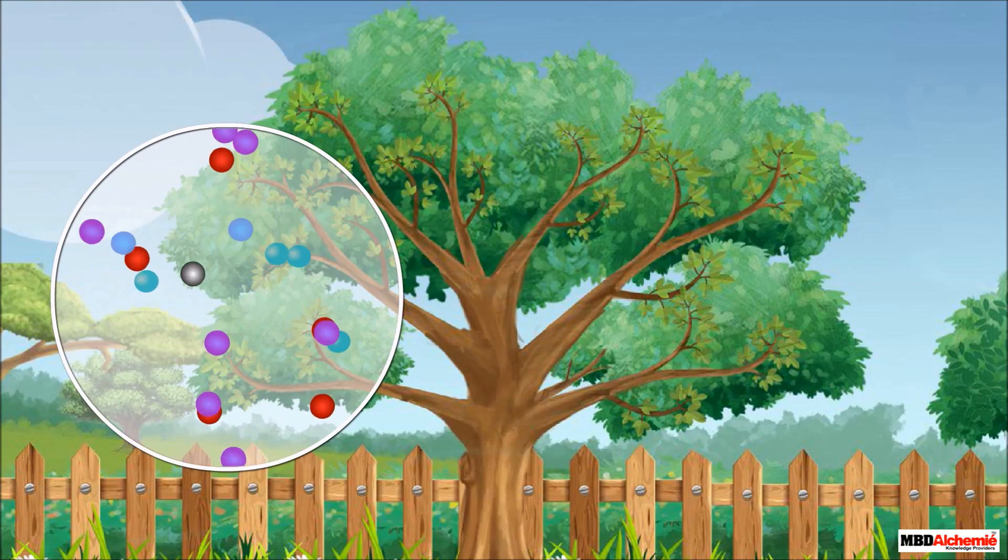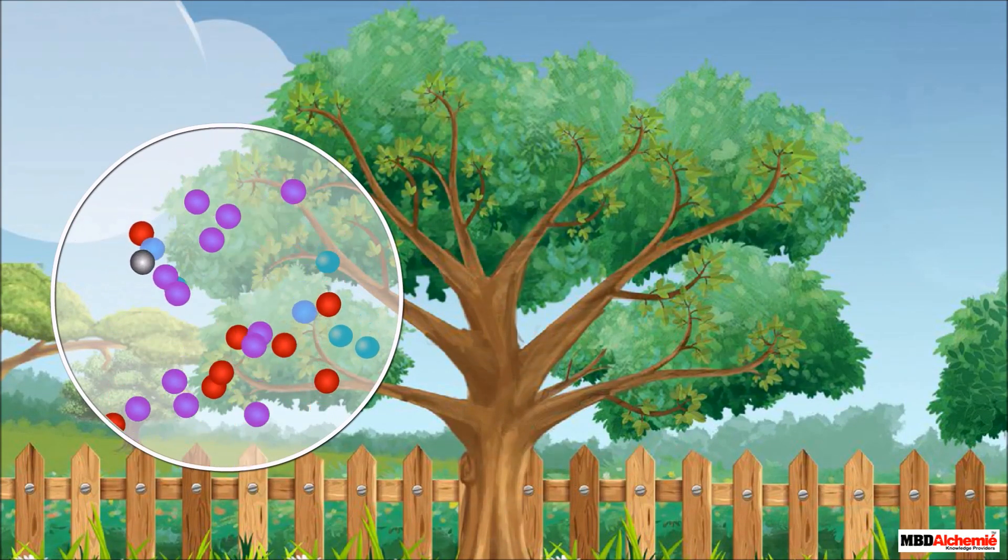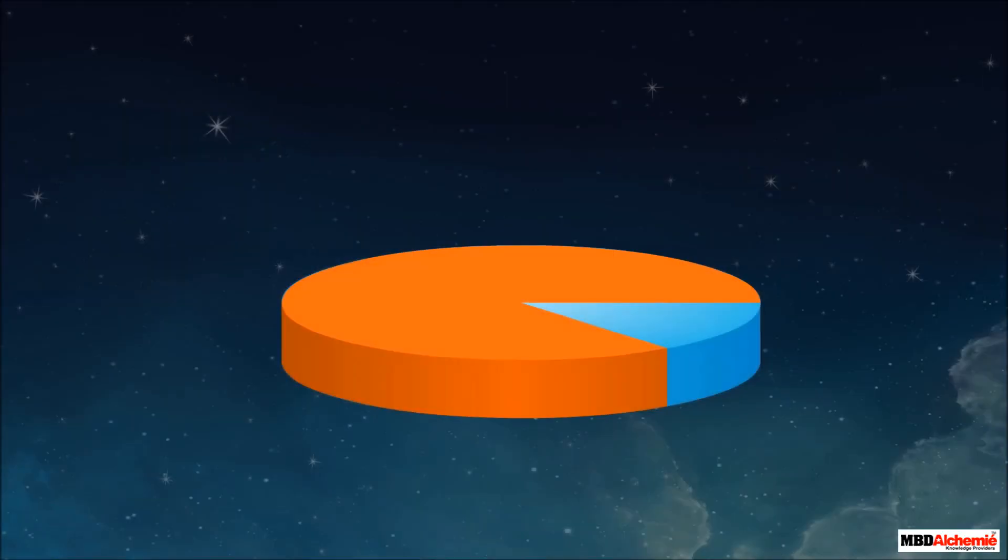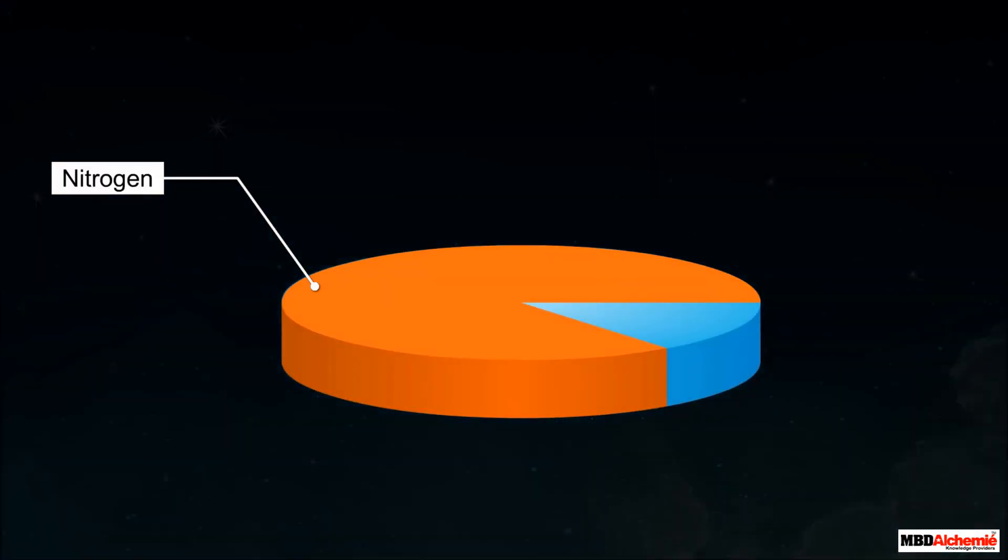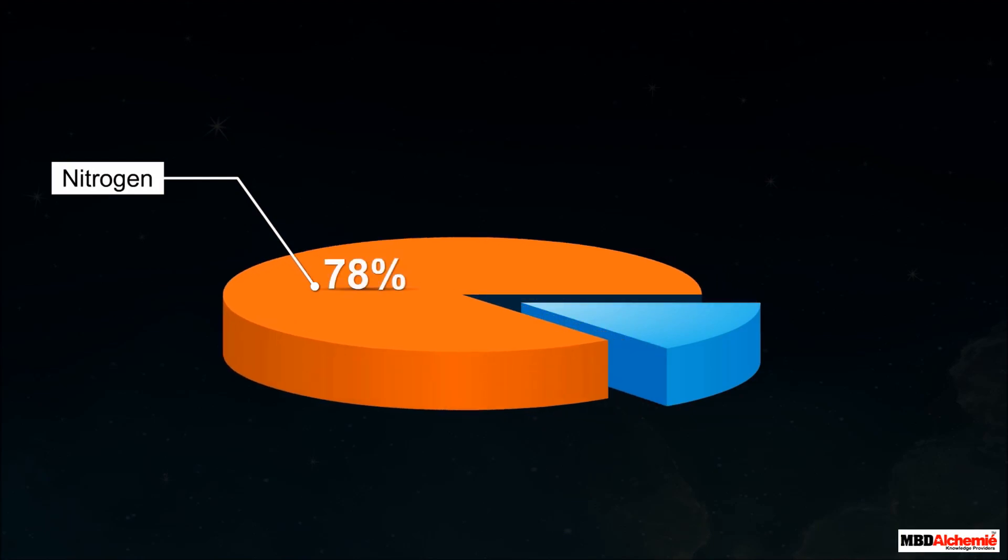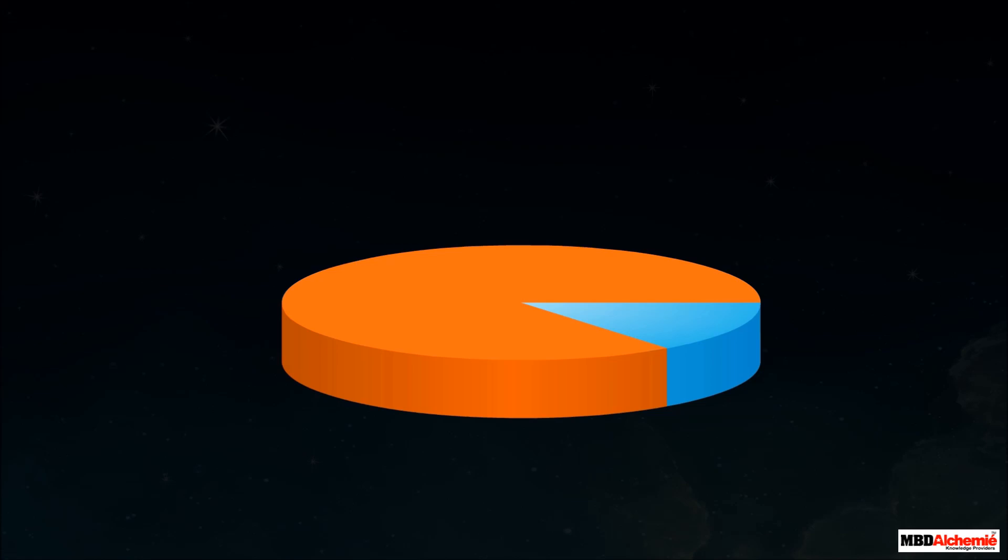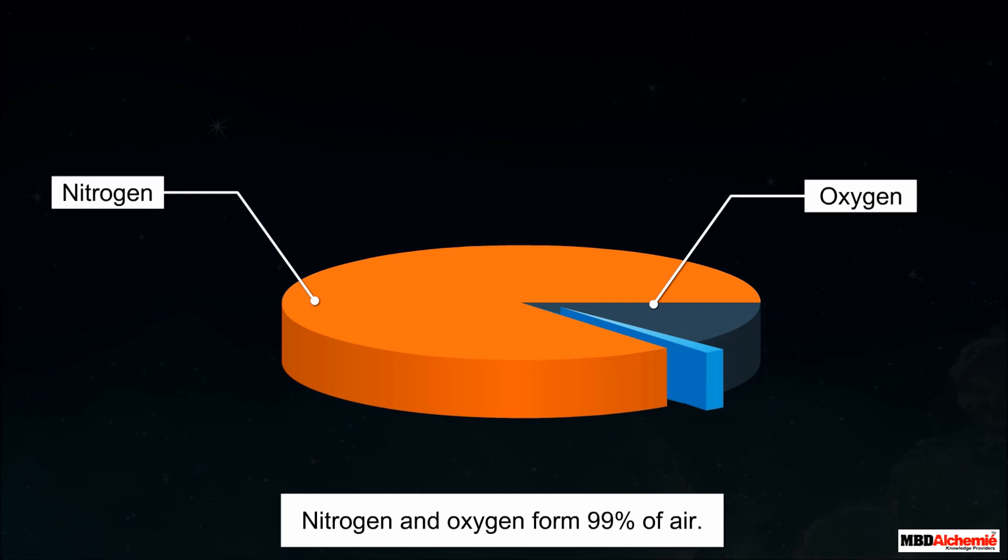The biggest component of air is nitrogen. It comprises around 78% of the air. Out of the remaining 22%, 21% of air is composed of oxygen. So nitrogen and oxygen gases form about 99% of air.